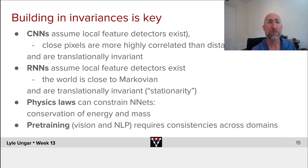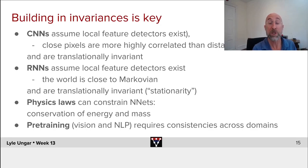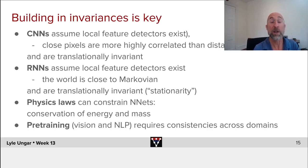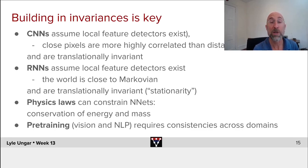We've also implicitly used these invariances through pre-training. Often we'll train a CNN on one set of images and rely on those feature detectors working on other images — that's an invariance. Or we train NLP on billions of sentences and trust that future sentences will have some of the same structure. So key to making almost all of our deep learning scalable is building in the right kind of invariance.